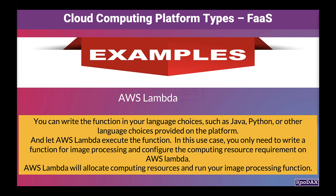In this use case, you only need to write a function for image processing and configure the computing resource requirements on AWS Lambda. The rest of the work, such as allocating computing resources and running your image processing function, will be handled by AWS Lambda.